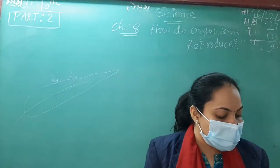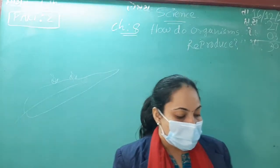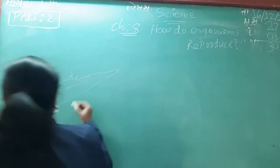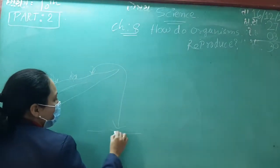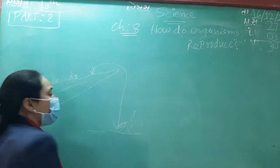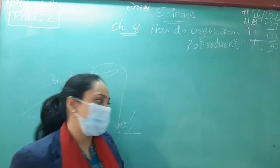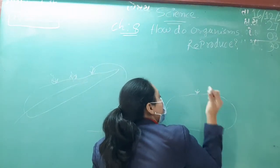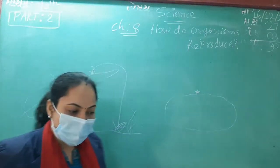Similarly, buds produced in the nodes along the leaf margin of Bryophyllum fall on the soil and develop into a new plant. The small leaves on Bryophyllum fall on the soil and a new Bryophyllum plant starts growing. Similarly, on potato, you find buds — if you grow those buds, a new potato plant is formed.